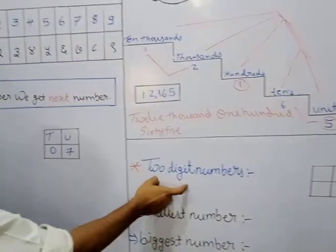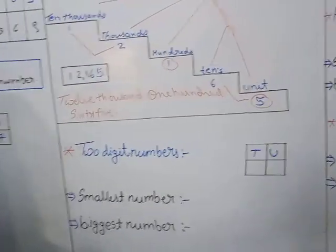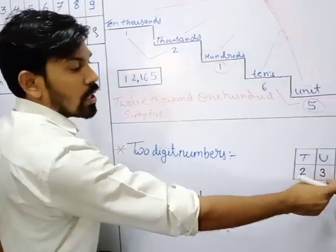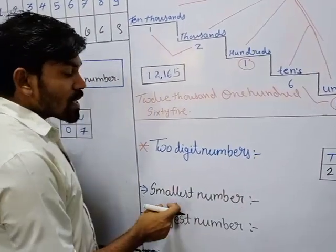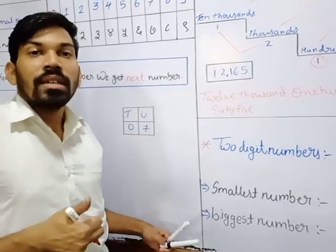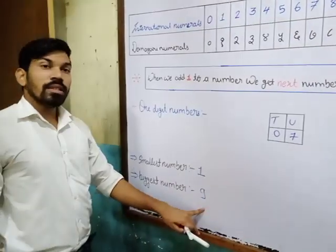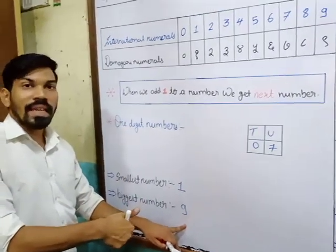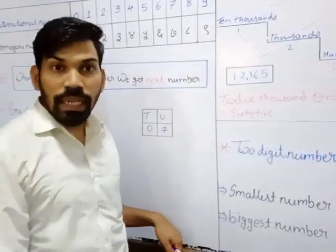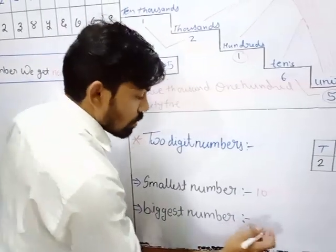The same way, a 2-digit number has 2 places: units and tens. Take any 2-digit number — I took 2 and 3, which becomes 23. Unit is 3, tens is 2. The smallest 2-digit number: the biggest number of the previous digit is 9, and 9 plus 1 gives us 10. So 10 is the smallest 2-digit number. And the biggest 2-digit number is 99.